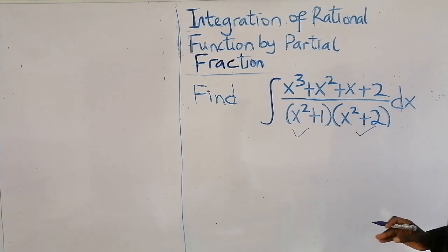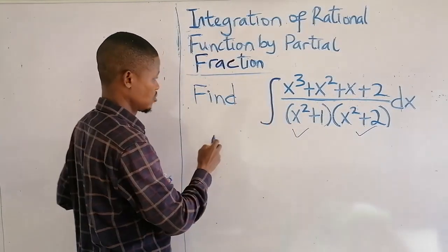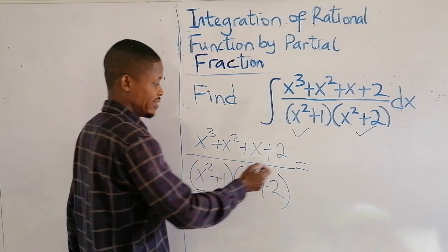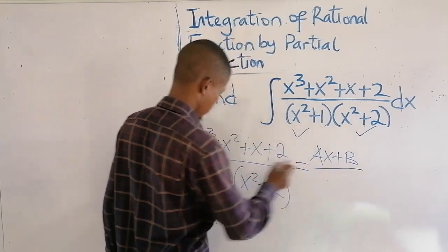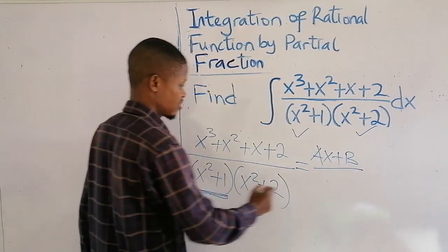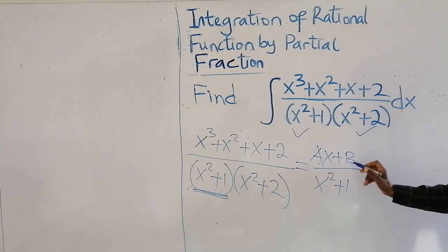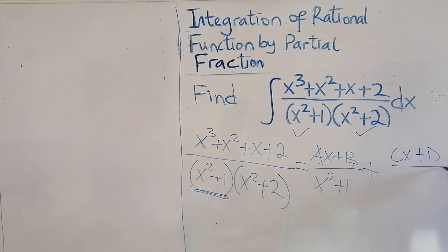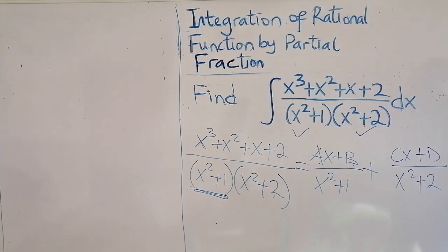Let's see how we can solve this. The first thing we do is take out the fraction and write it out. We cannot factorize it, so the linear numerator will be ax plus b over the irreducible quadratic factor. Plus the second part — the constants a and b are constants — so the next constant will be cx plus g, all over the second irreducible quadratic factor, x squared plus 2.